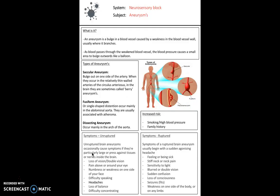There are three types of aneurysm. A saccular aneurysm involves bulging at one side of the artery. A fusiform aneurysm is a spindle-shaped distension that occurs mainly in the abdominal aorta. Lastly, a dissecting aneurysm occurs mainly in the arch of the aorta.